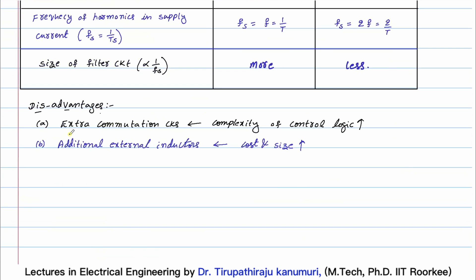The disadvantages of multi-phase choppers are: first, extra commutation circuits are required for each chopper, which automatically increases the complexity of the control logic since a proper gap between firing instants must be maintained. Second, additional external inductors are used for each chopper, so more inductors are required — automatically increasing both cost and size of the circuit.